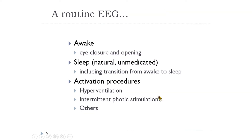A routine adult EEG records wakefulness, natural sleep at least to stage 2 non-REM, and further provocative procedures after wake-up. The sequence may vary, but we try to gather all EEG changes — both normal and abnormal — through different states for a more comprehensive impression. For pediatric EEG beyond the newborn stage the principle is the same, but younger children may not be cooperative. Sometimes we can only obtain a sleep EEG, or even worse, a sedated sleep EEG, which we always try to avoid.